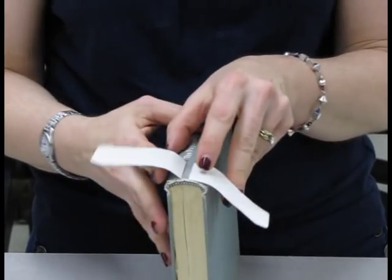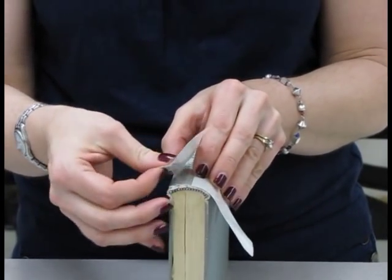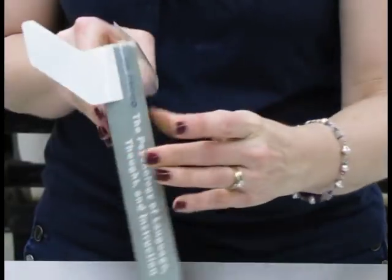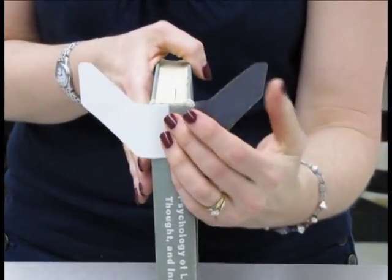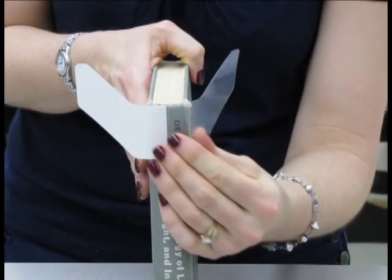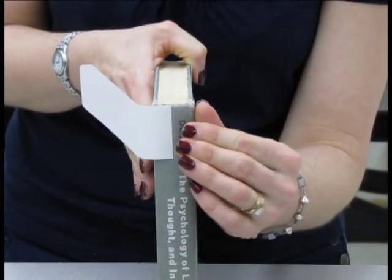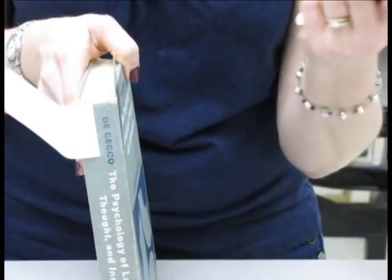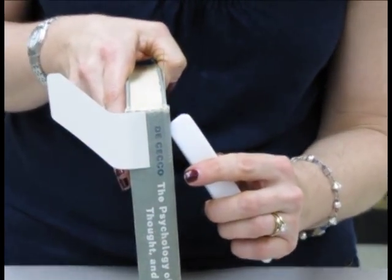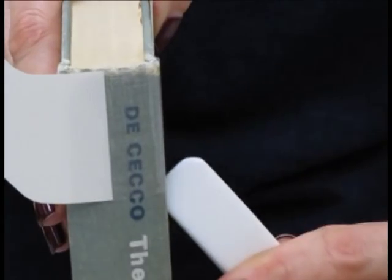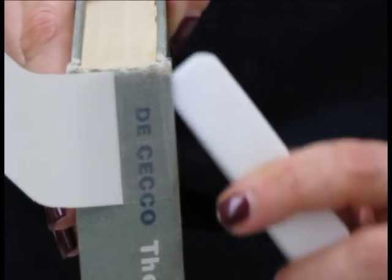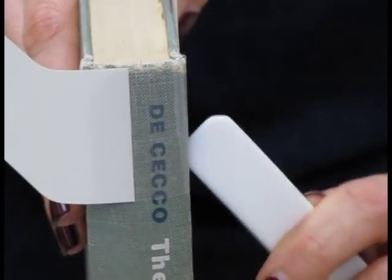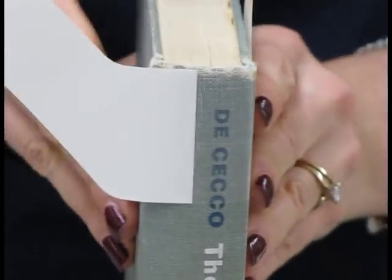Peel the liner from the right wing. And as it is going around the corner, take your bone folder and just rub it in the gutter to ensure that it has attached itself.